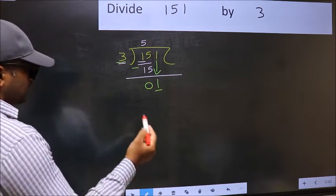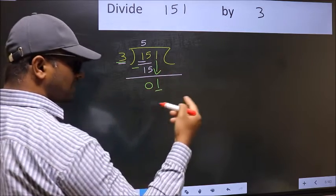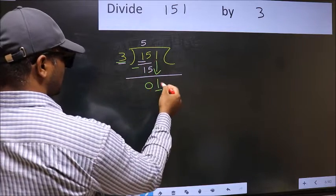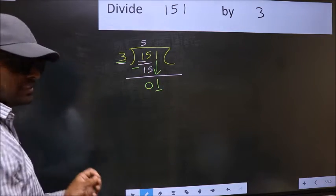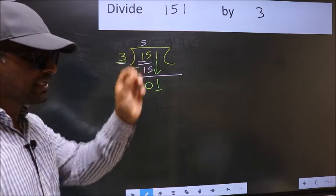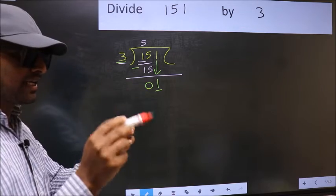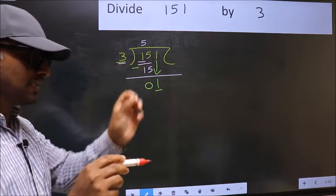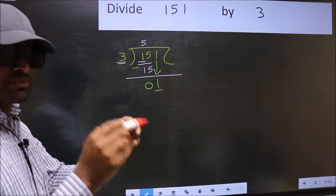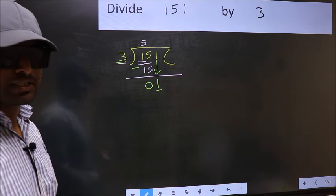Because just now you brought this number down. And in the same step, you want to put a dot and take 0. Which is wrong. Bringing the number down and putting a dot and taking 0 both at the same step - you are not supposed to do.